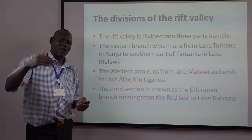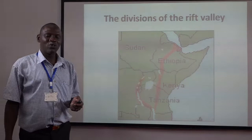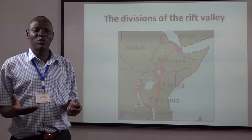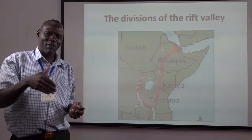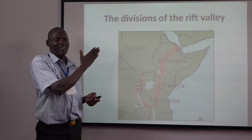We are going to look at a map which shows the rift valley — how it looks from the Red Sea through Ethiopia into Lake Turkana. From Lake Turkana it slopes down to Lake Malawi, which you can see on the southern side of Tanzania. Then it follows the western boundary with the DRC until it reaches Uganda, where Lake Albert is. You will be able to have a clear view of that arm.